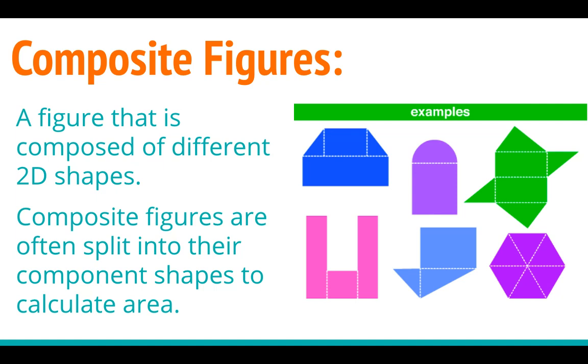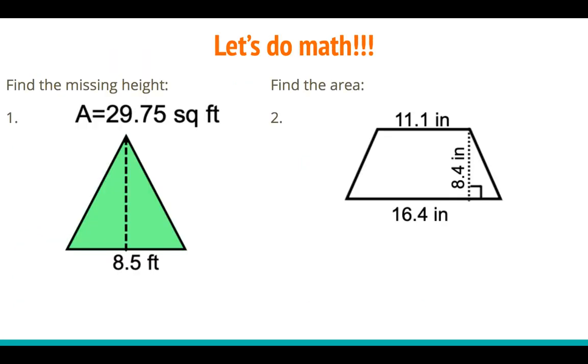So composite figures are just figures that are composed of different 2D shapes. And so normally we just split them up, kind of like you can see in these examples. You split them up into easy-to-figure-out shapes. So now let's do some math. Let's do some practice problems.